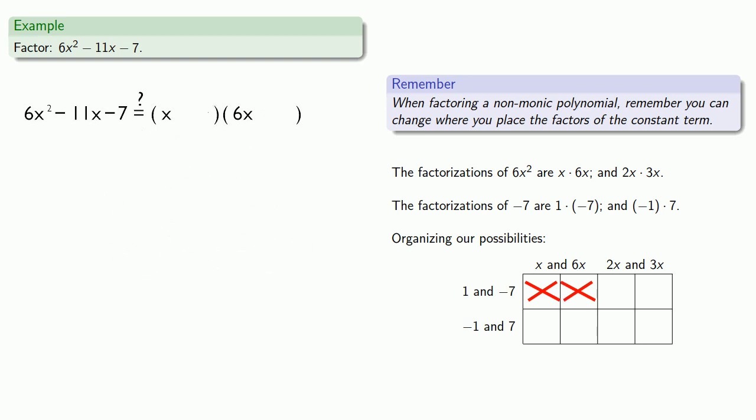Well, let's try negative 1 and 7. So does this factor as x minus 1 times 6x plus 7? Nope. Switch the location of the constant terms. Nope.